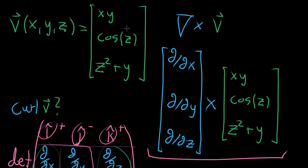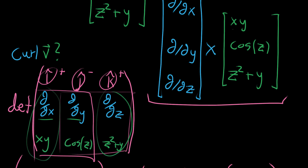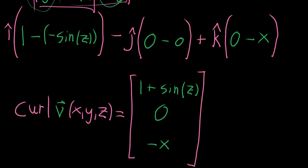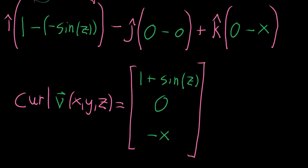In general, that's how you compute curl. You look at how your function is defined in each component, then imagine taking the cross product between the del operator — partial with respect to x, partial with respect to y, partial with respect to z — and your function. It involves taking six different partial derivatives, and it's mainly a matter of bookkeeping to make sure you do it right.